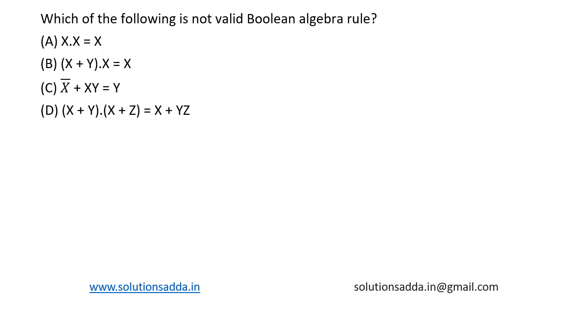This is a question from digital logic design. Which of the following is not a valid Boolean algebra rule? Let's see each option one by one. First one is X into X is equal to X.